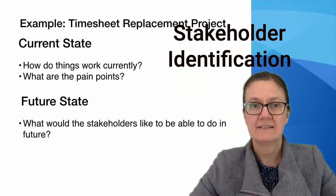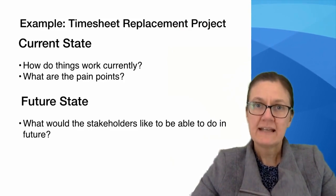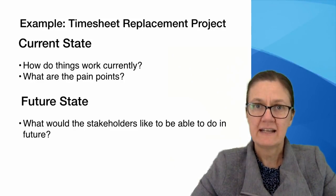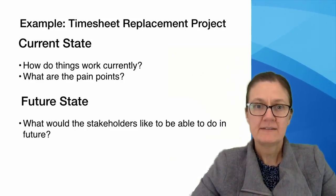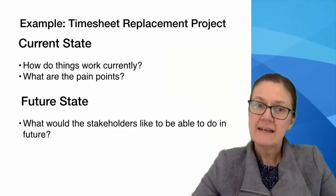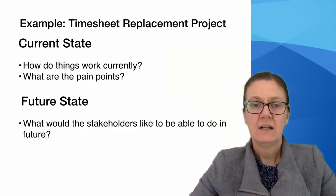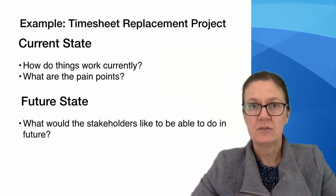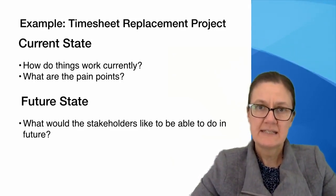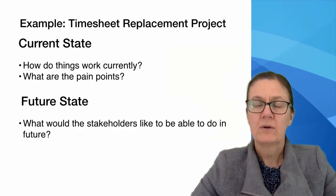Once you understand who the stakeholders are that you're able to engage with, that's when you start to look at different ways to understand the current state. What that means is you need to work out and be responsible for understanding how that particular department currently does their timesheets. What are the processes that they follow? What systems do they use? Do they have any controls in place? You really have to understand it to a low level of detail so that you can then start to explore what are the exact pain points that they have.